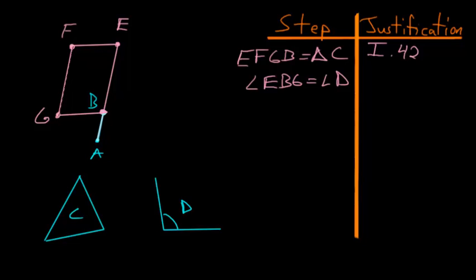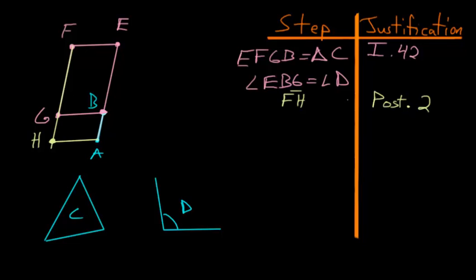From here, let's extend line FG as far as we wish, in a way so that we can construct a line through point A parallel to line GB. We label this point H. We extended line FG all the way to H, which we can do because of Postulate 2, and then we constructed AH parallel to BG, which we can do because of Book 1 Proposition 31.